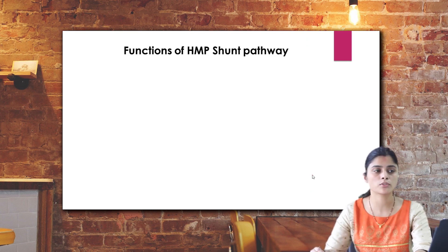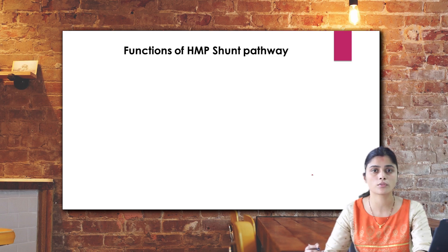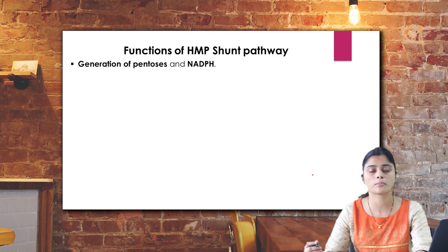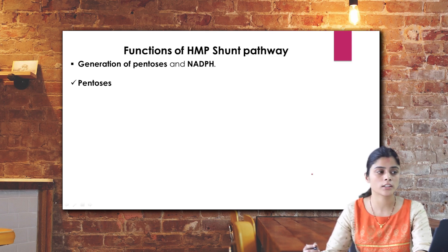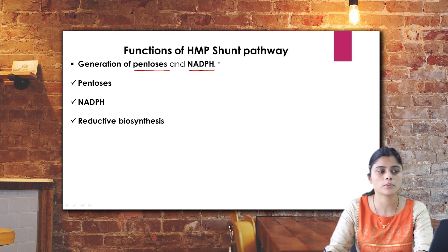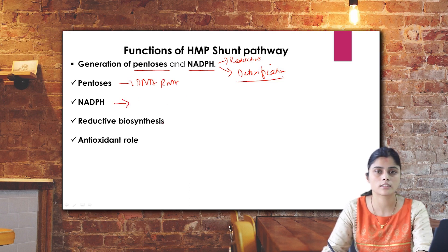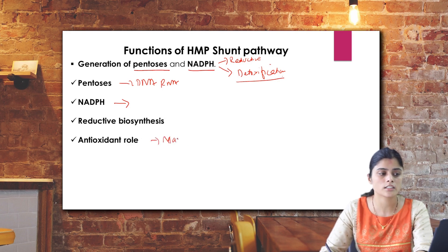The HMP shunt pathway is not an energy-yielding process but rather supports anabolic processes: fatty acid synthesis via NADPH, DNA and RNA synthesis via pentose sugars, phagocytosis by macrophages, and maintaining reduced glutathione via NADPH. The two important biomolecules formed are pentoses and NADPH. NADPH is required for reductive biosynthesis of fatty acids, cholesterol synthesis, steroid hormone synthesis, detoxification by xenobiotics, and macrophage phagocytosis. Pentoses provide the sugar for DNA and RNA.